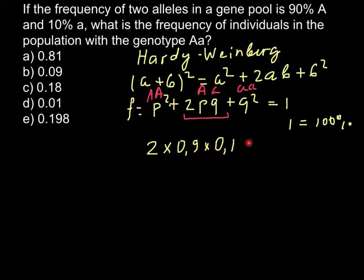0.9 here would be 90% and 0.1 would be 10%. The answer would be 0.18. We can also transfer it to percentage. We just have to move the decimal sign two places to the right, and we are going to get 18%. The correct answer, as you see, would be C.